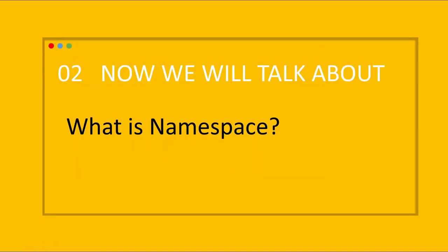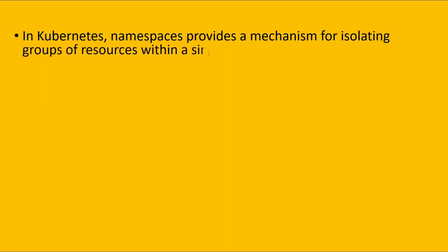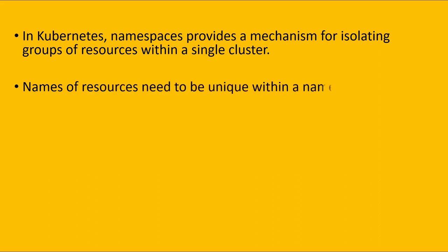The next topic is: what is namespace? As per the Kubernetes official documentation, namespaces provide a mechanism for isolating groups of resources within a single cluster. If we create a pod and mention the namespace 'development', then this pod can be visible only inside the development namespace. Names of resources need to be unique within a namespace, but not across namespaces.